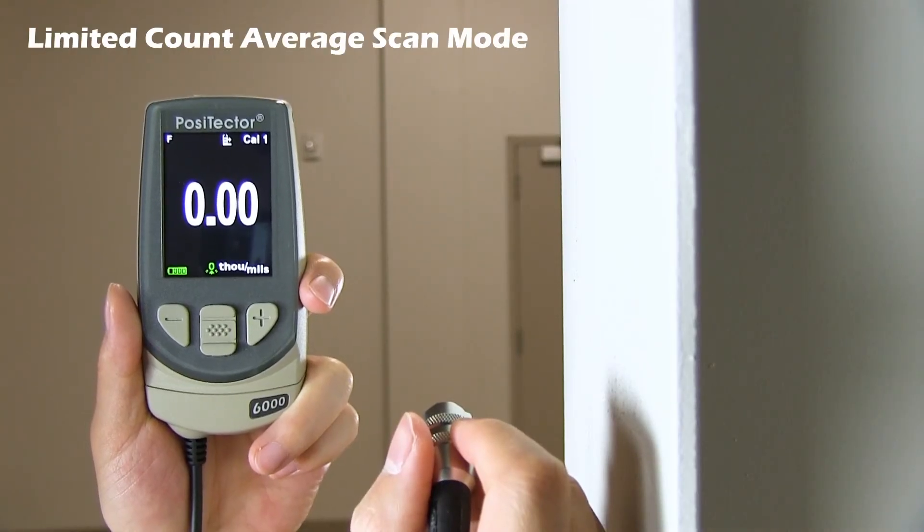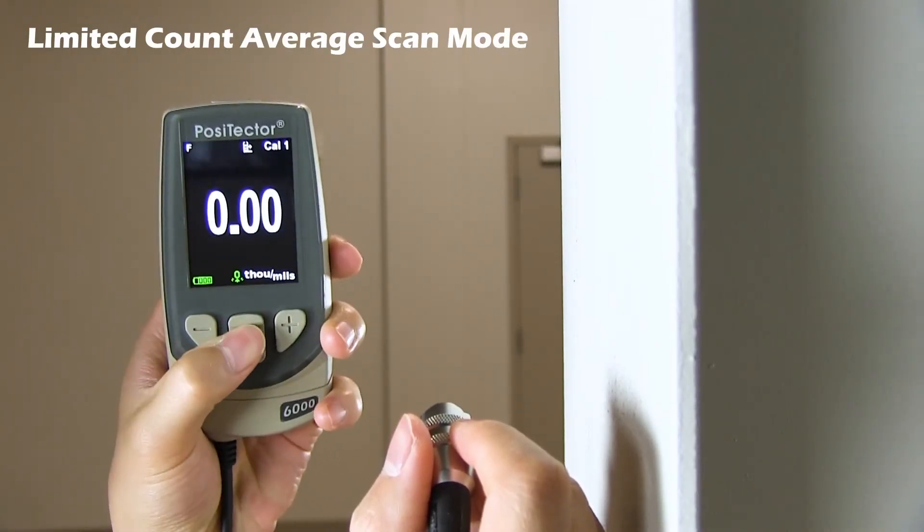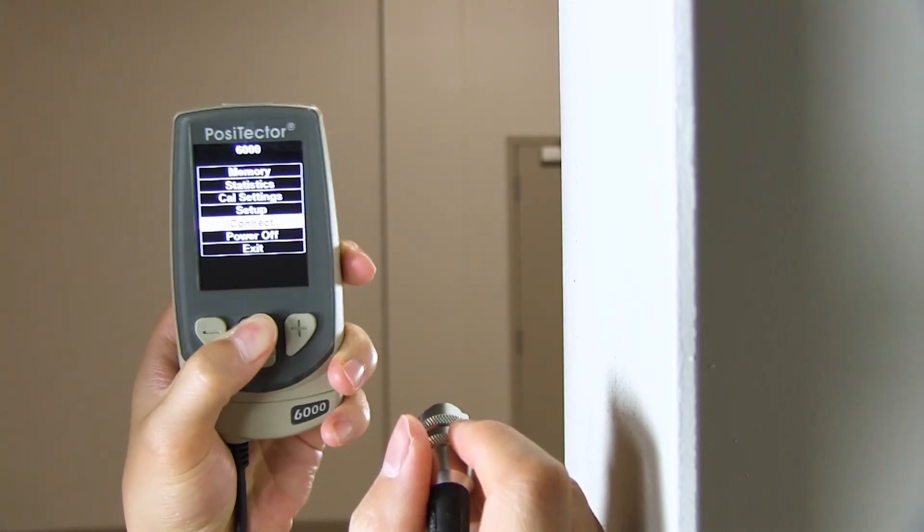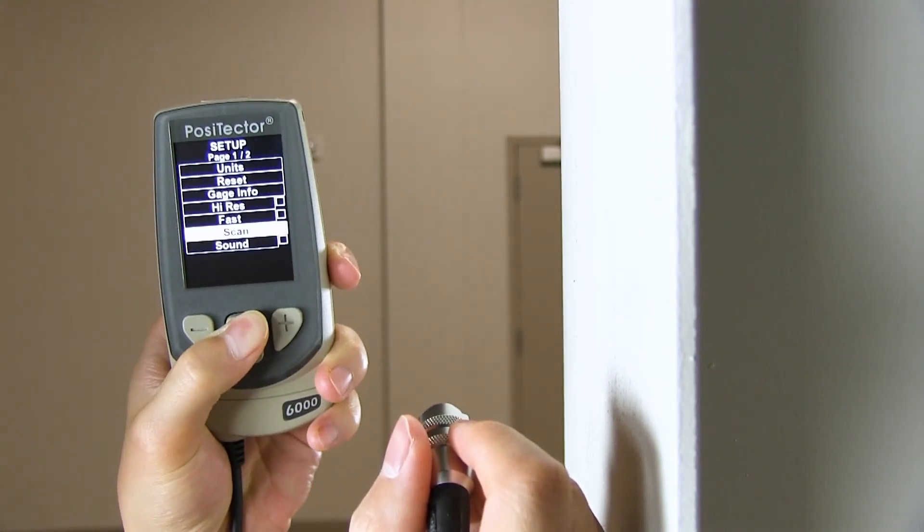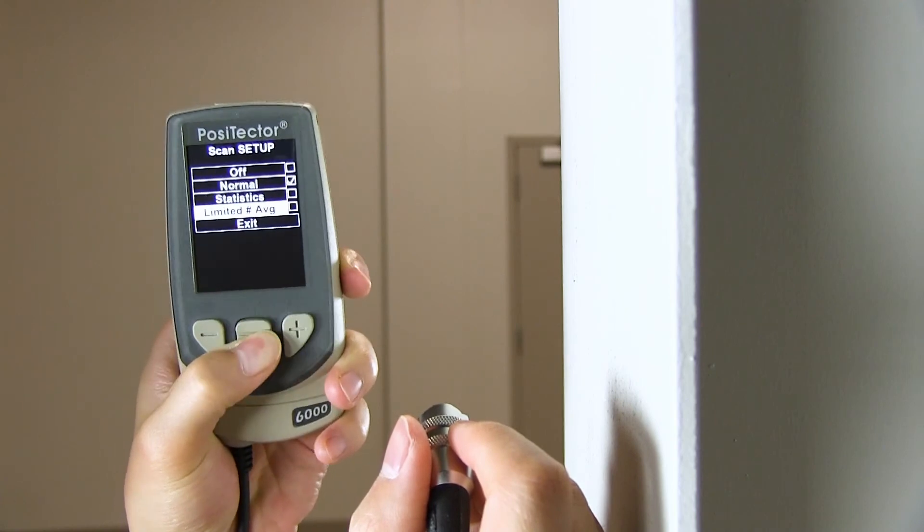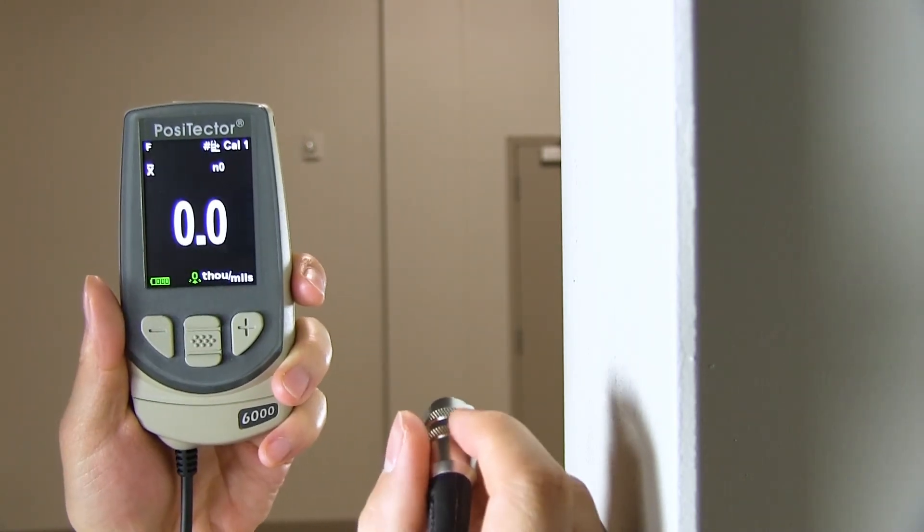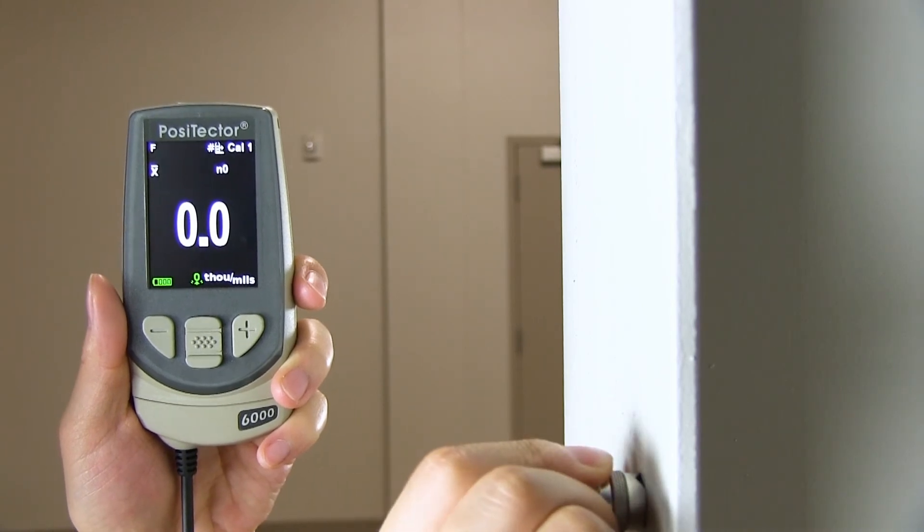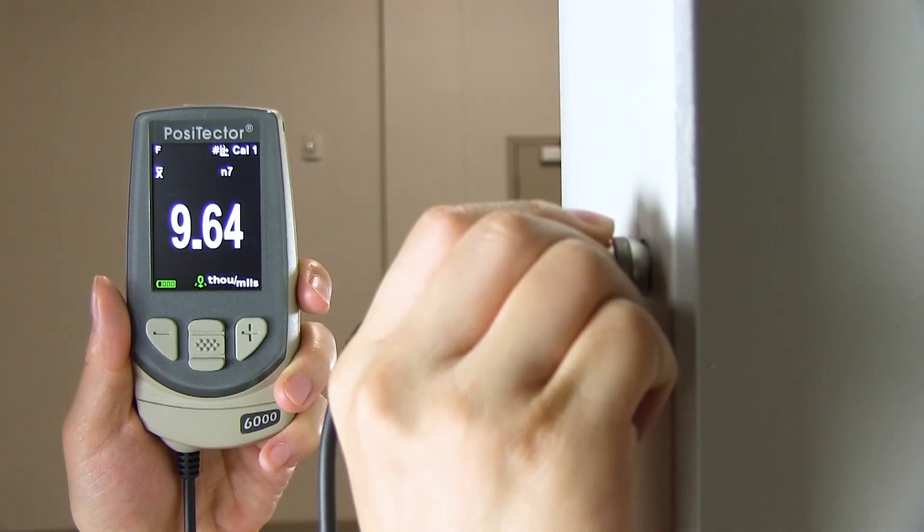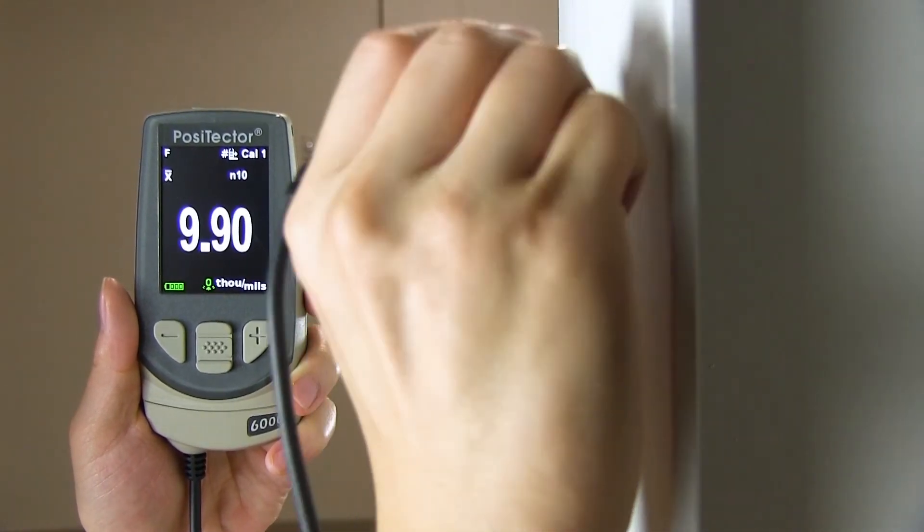In limited count average scan mode, the user is prompted to select a number of readings per scan. Each time the probe is placed on the surface, the selected number of readings is taken. The average is displayed on the screen and saved into memory if enabled. Like statistics scan mode, the individual readings aren't displayed or saved into memory.